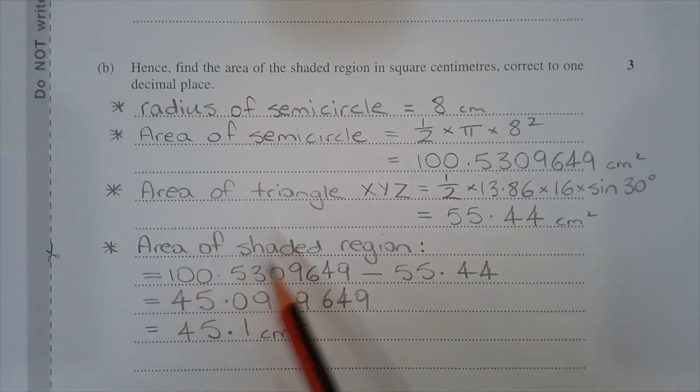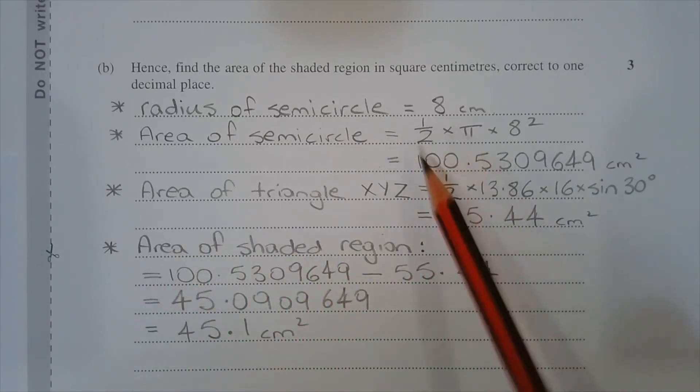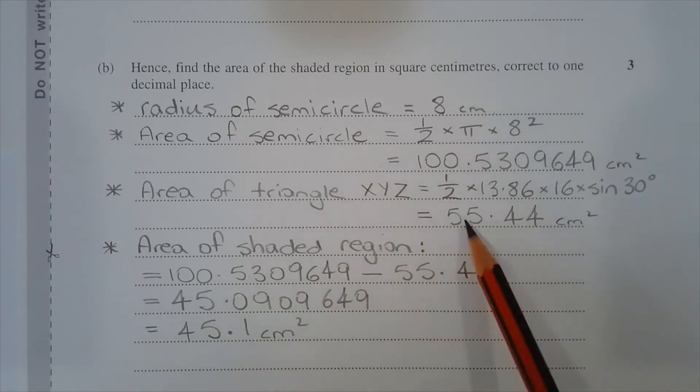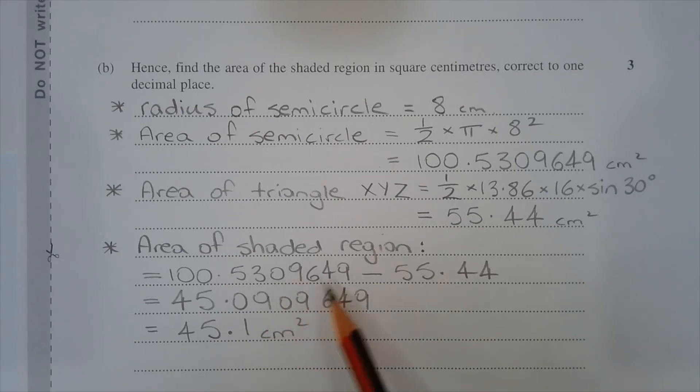The area of the shaded region is the difference between the area of the semicircle and the area of the triangle. So that's equal to 100.5309649 minus 55.44 and that's equal to 45.0909649. Rounding this value to one decimal place, that's equal to 45.1 square centimetres.